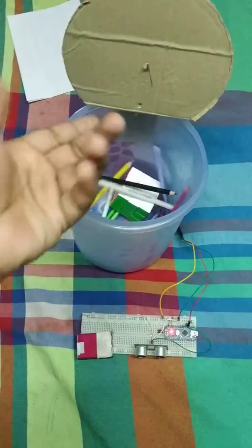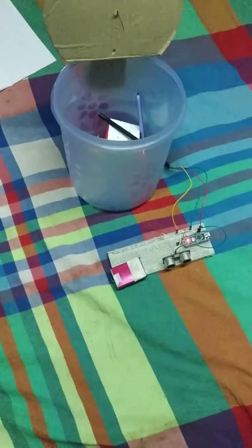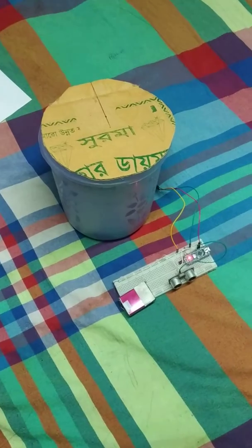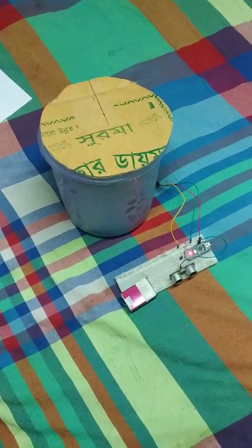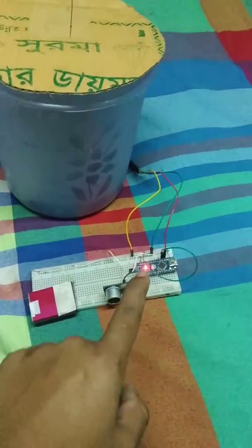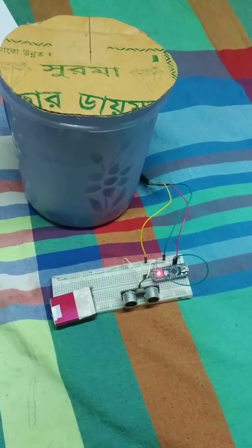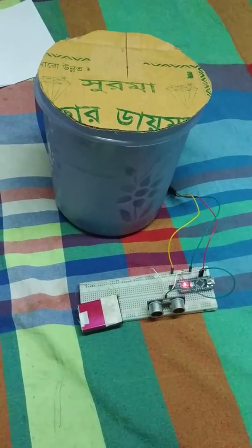Here is the smart dustbin. This is Arduino, this is a sensor, and this is a battery. This is a small model that is developed.